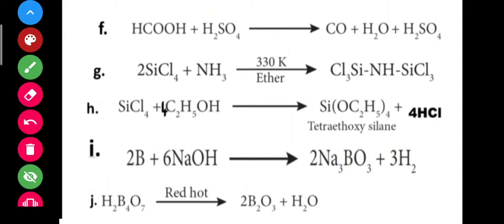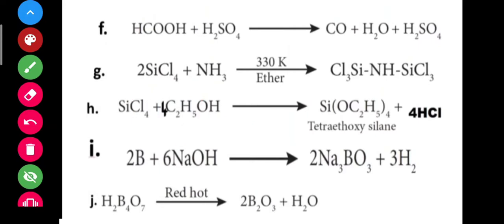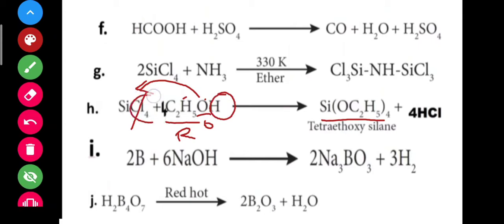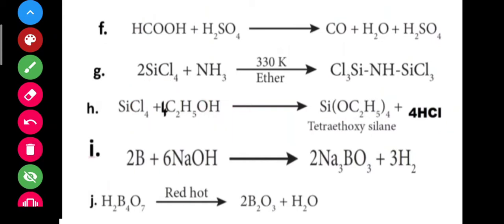In hydroboration, if we can replace chlorine with OR groups, that is the concept. Chlorine is replaceable with alcohol or OR groups. C2H5 is R, so OR is C2H5O. In chlorine's place we replace with OR. If we replace with OC2H5 — that is R. If we replace hydrogen with H5, then H is R. So chlorine is replaced by R.